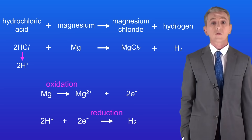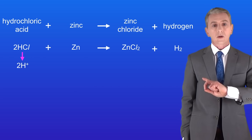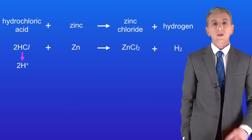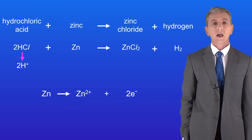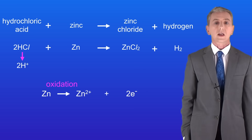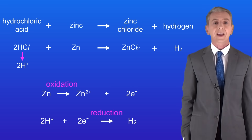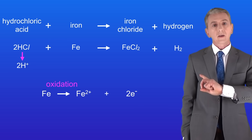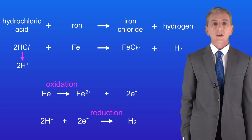We can see the same idea when we look at the reactions of zinc and iron with acids. Here's zinc reacting with hydrochloric acid — the zinc atoms are losing two electrons to form zinc ions Zn²+, and again this is an example of oxidation. The hydrogen ions from the acid are gaining the electrons, so they're being reduced. Similarly, iron reacting with hydrochloric acid shows the iron atoms being oxidised as they lose electrons, and the hydrogen ions from the acid gaining these electrons and being reduced.